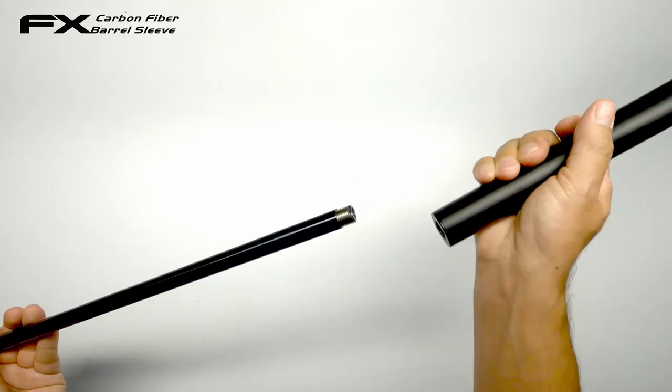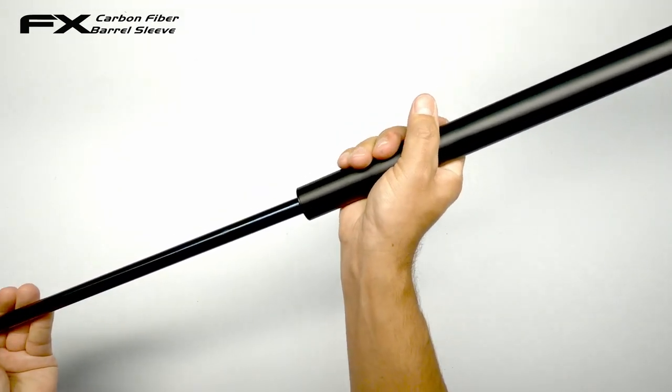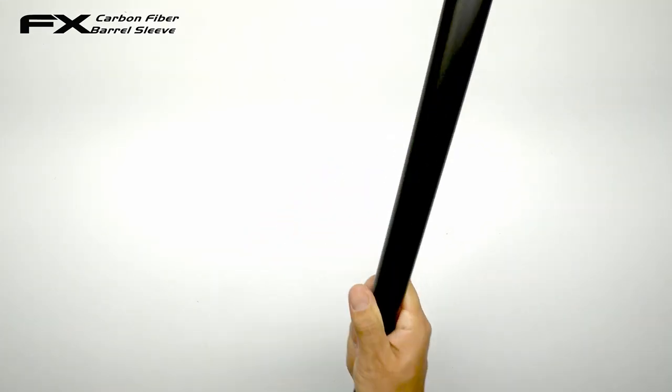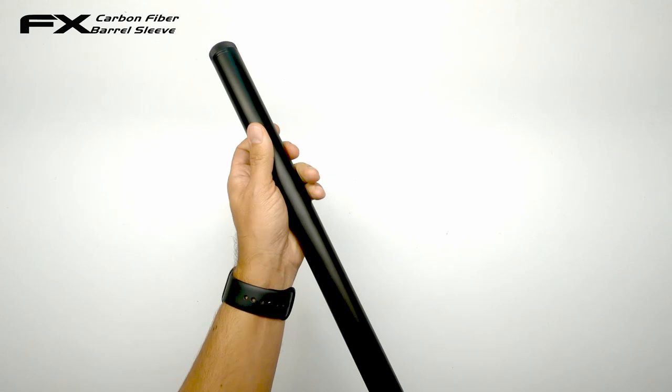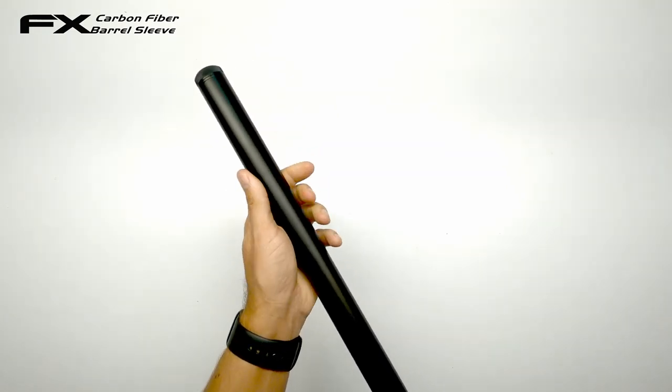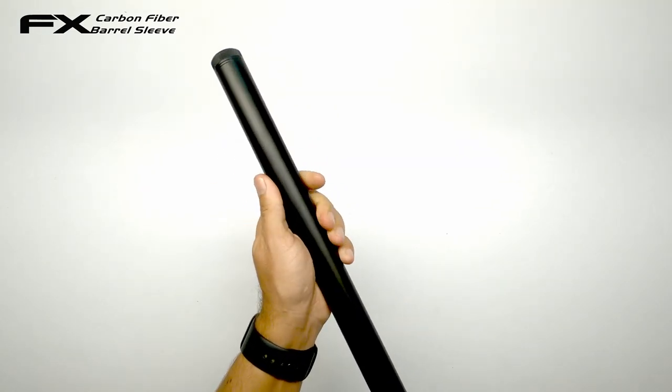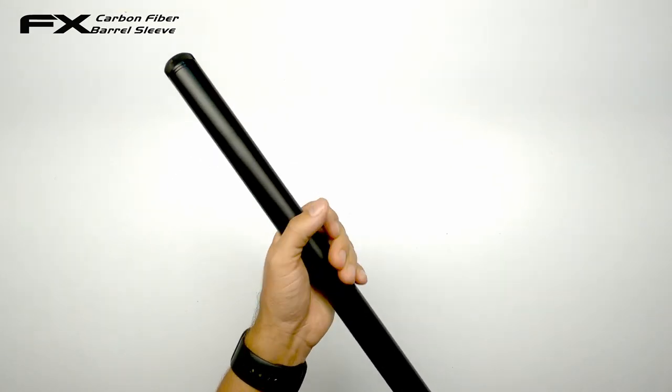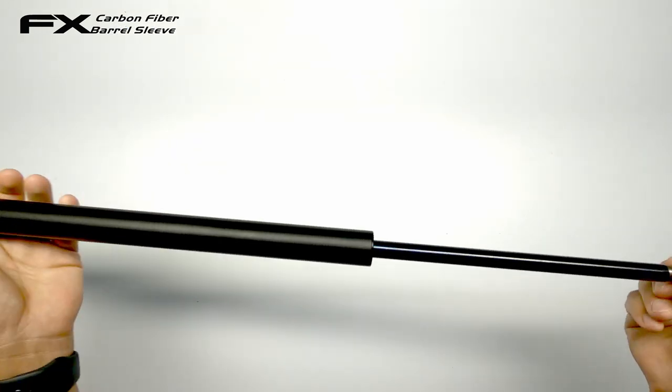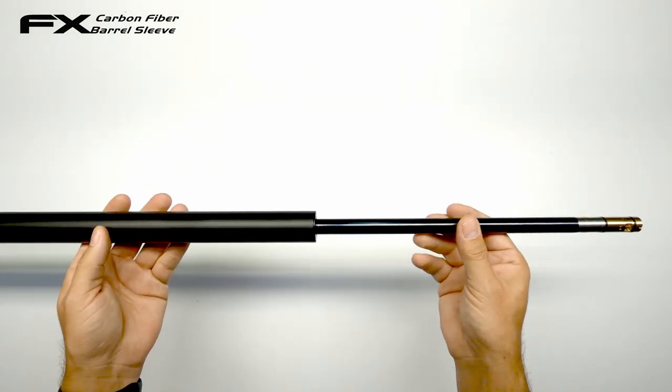Then the last part is your shroud to put back on. It can be a little challenging making sure to have it sit on the end. Like so. And you're ready to enjoy your stiffened barrel.